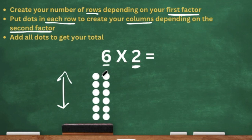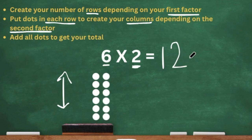We are going to add them all up. That's one, two, three, four, five, six, seven, eight, nine, ten, eleven, twelve. We have 12 altogether. Super cool!